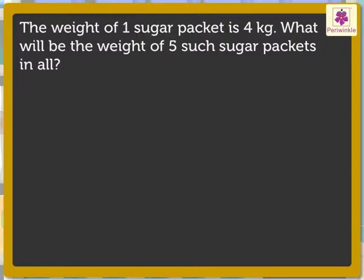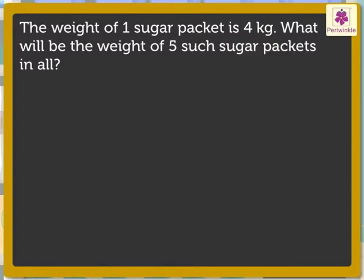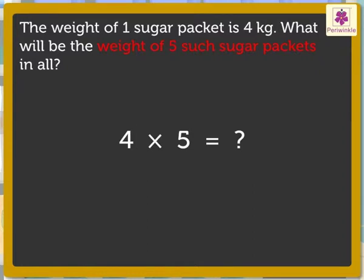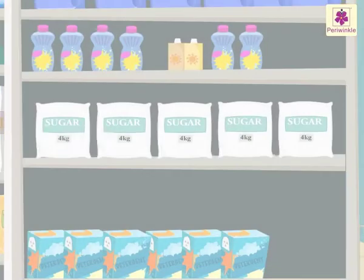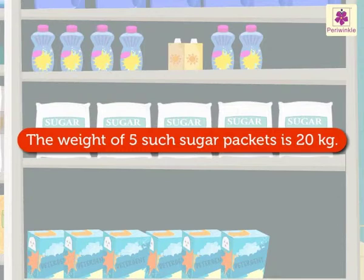Now, let us see what we have to find out — the weight of five such packets. We have to multiply 4 and 5 to find the weight of five such sugar packets. We know that 4 into 5 is equal to 20, as we have already studied the table of 4. We found the answer. The weight of five such sugar packets is 20 kilograms.